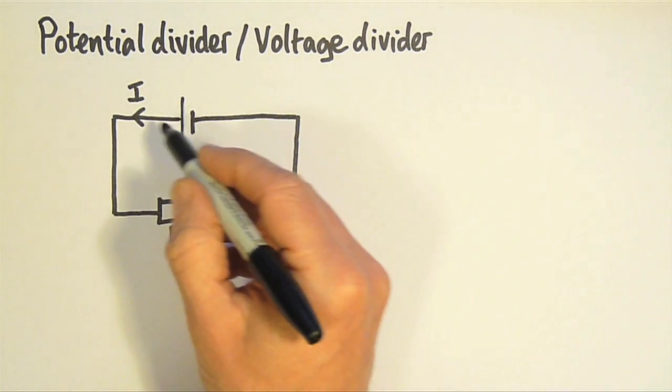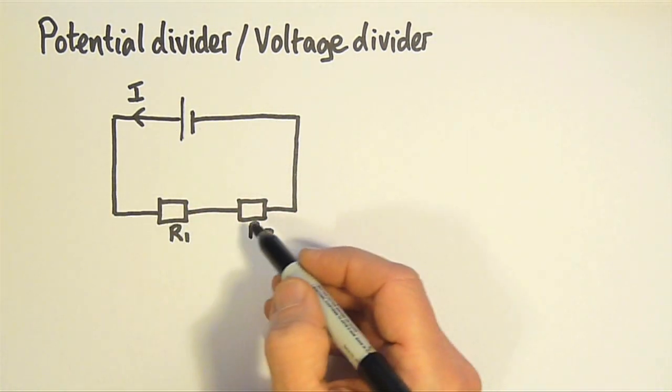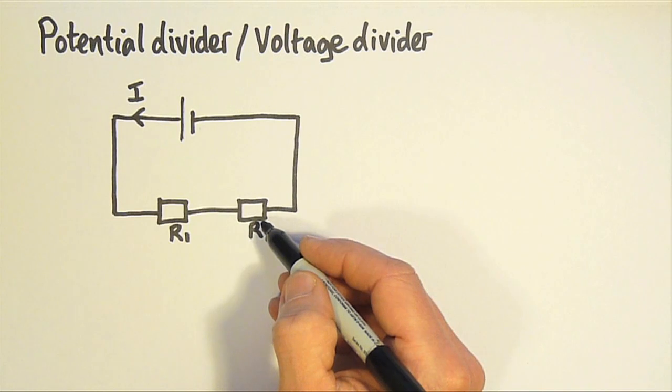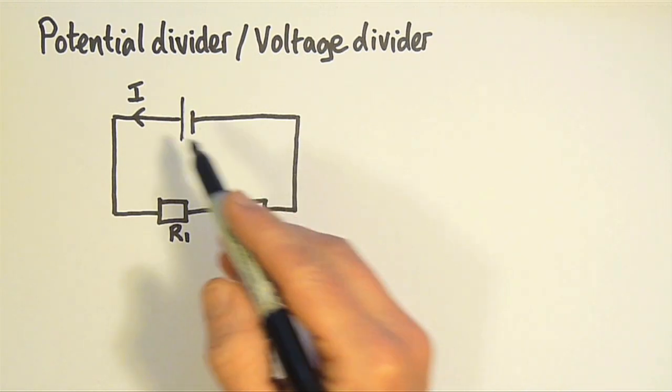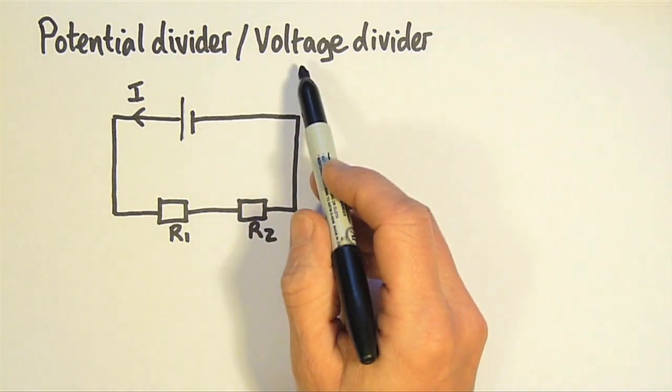Here's a simple circuit containing two resistors, R1 and R2, in series. We can use this circuit as a potential divider or a voltage divider.